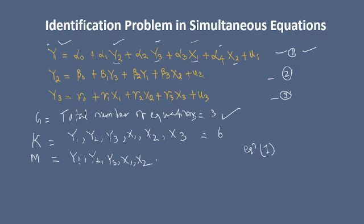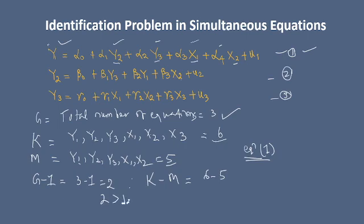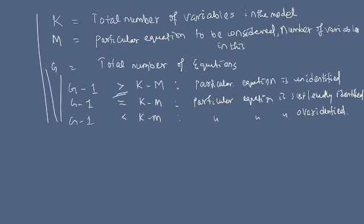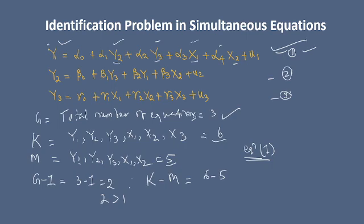For equation number one, the variables are y1, y2, y3, x1, x2 — so M is equal to 5. Now G minus 1 equals 3 minus 1 equals 2, and K minus M equals 6 minus 5 equals 1. Since 2 is greater than 1, the rule says that particular equation is unidentified. So equation 1 is unidentified.